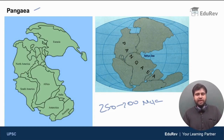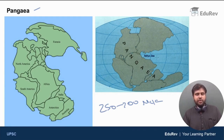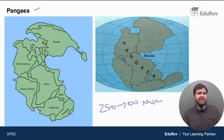This is how Pangaea looked like. Just keep in mind the name Tethys and the location of Tethys, because that is very important when we discuss about the formation of Himalayas. This is how the landmass on the Earth existed somewhere between 250 to 200 million years ago.